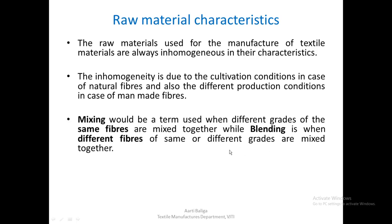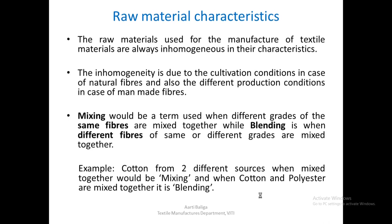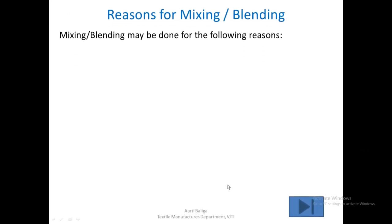To give an example: cotton from two different sources when mixed together would be called mixing, whereas if cotton and polyester — a natural and a manmade fiber — are mixed together, it is called blending. Let us go ahead and see what are the reasons for this mixing or blending.